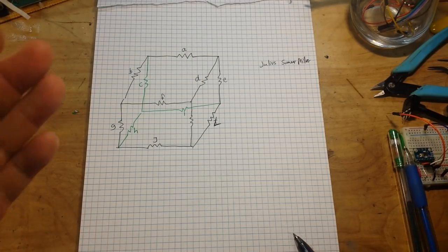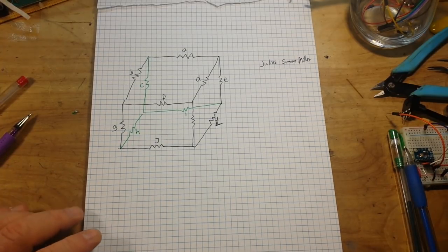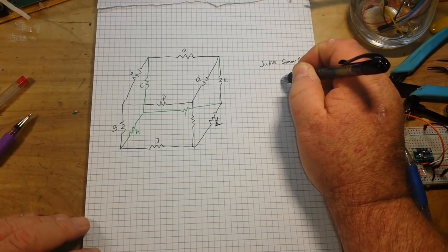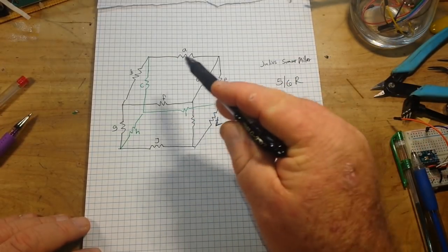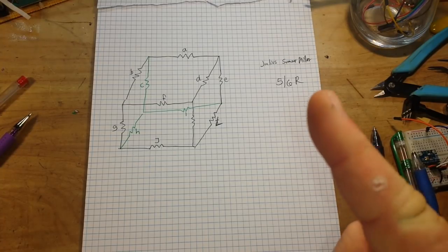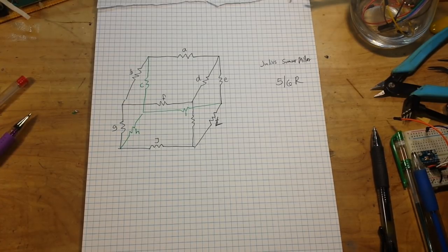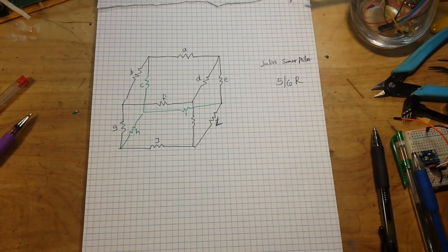So we built a cube yesterday, and we talked about finding the ohmic resistance between two points. I told you that the answer is 5 sixths of R. We're assuming all of these are the same value. It doesn't matter what they are. And then I challenged you to solve it. But nobody has the solution as of yet. So I'm going to show you how I was taught to do this.